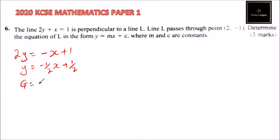The gradient here is -1/2. Because the two lines are perpendicular, the gradient of L equals 2, so that when you multiply -1/2 times 2 you get -1. The product of the gradients of two perpendicular lines is always equal to -1.